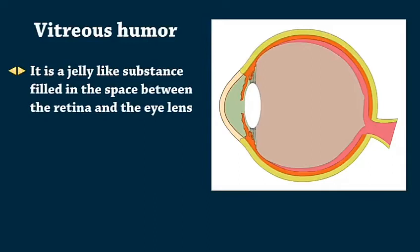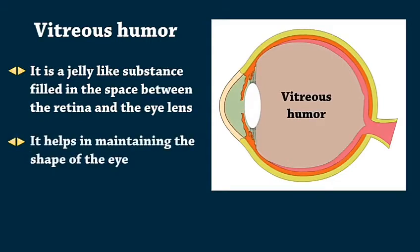Vitreous humor is a jelly-like substance filled in the space between the retina and the eye lens. It helps in maintaining the shape of the eye.